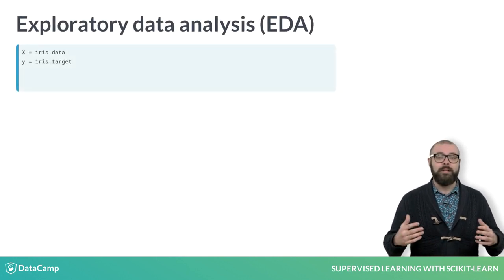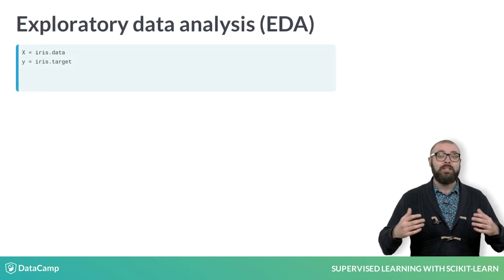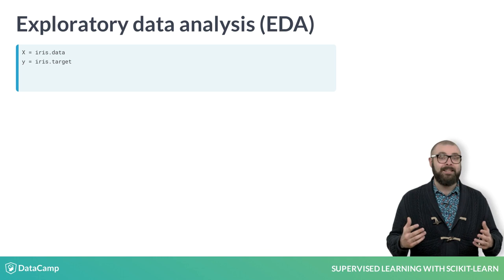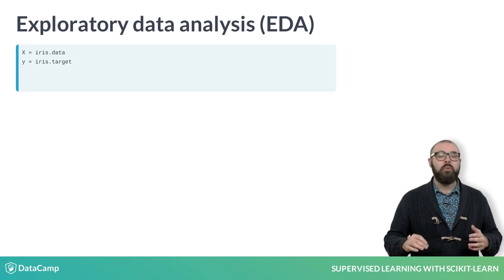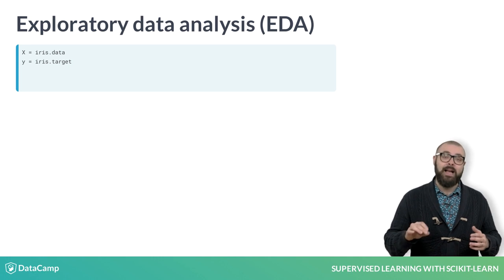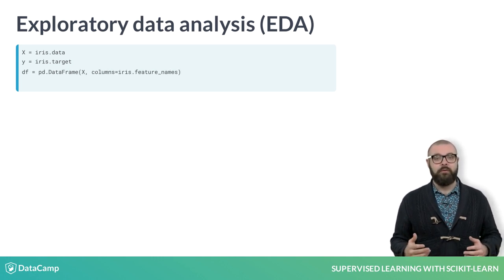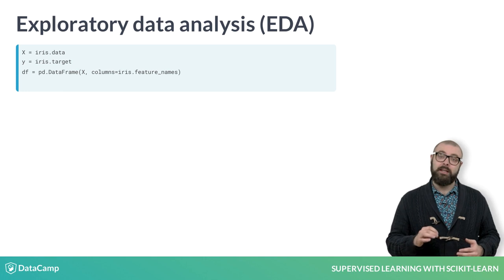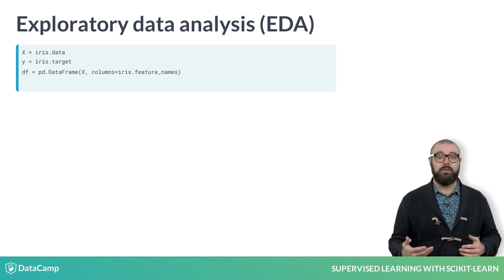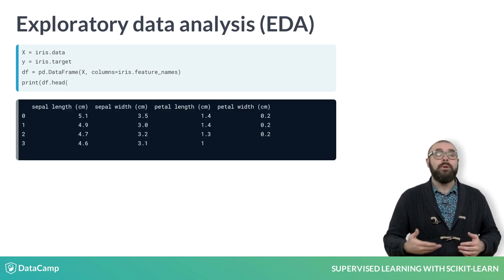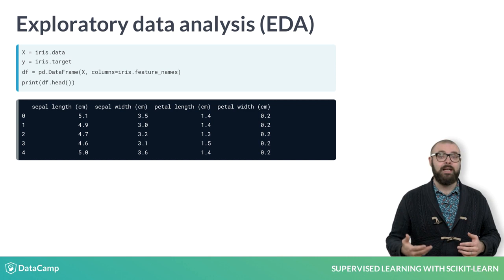We can see this by printing iris.target_names, in which Setosa corresponds to index 0, Versicolor to index 1, and Virginica to index 2. In order to perform some initial exploratory data analysis, or EDA for short, we'll assign the feature and target data to X and Y respectively. We'll then build a DataFrame of the feature data using pd.DataFrame and also passing column names. Viewing the head of the DataFrame shows us the first five rows.